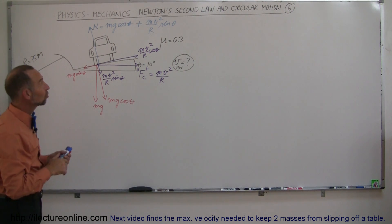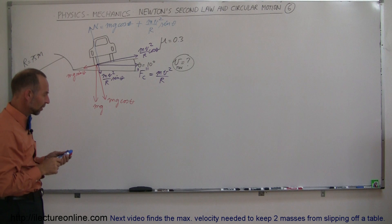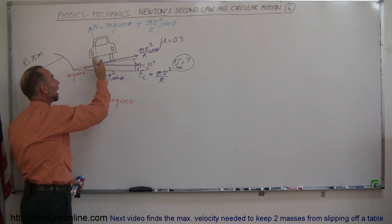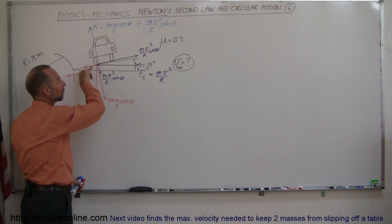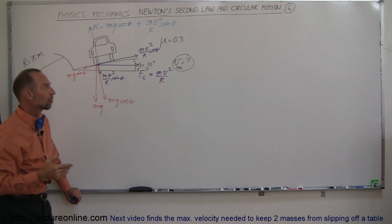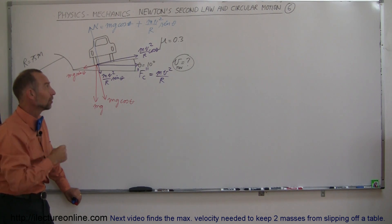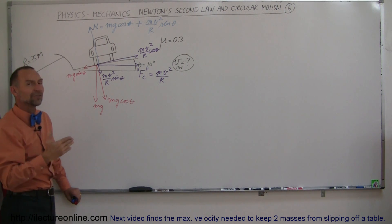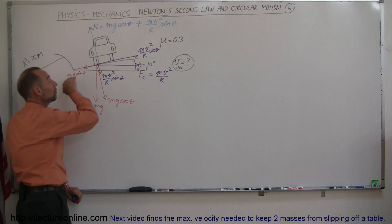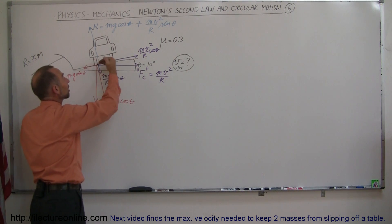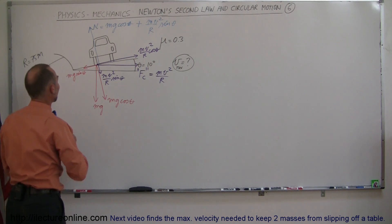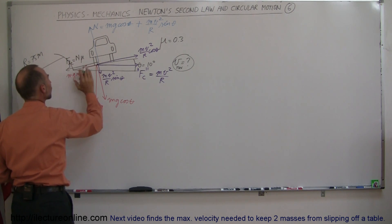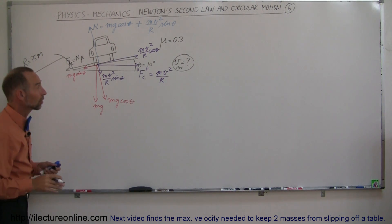Which direction will the friction force act? It can go either way. If the car is driving too slow, it would tend to slide down to the inside of the road, and friction would point to the outside. But in this case we want the maximum velocity — if the car goes too fast it will slide up the hill, and friction is what prevents that. So the friction force acts to the left, equal to the normal force times mu.